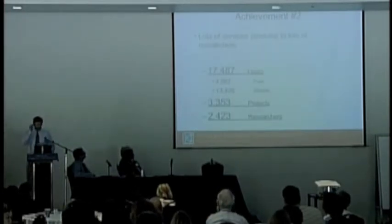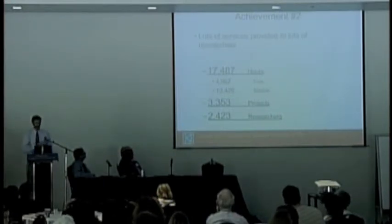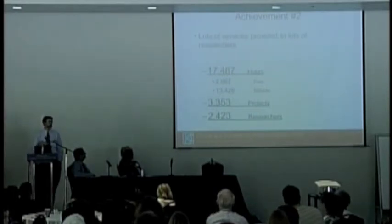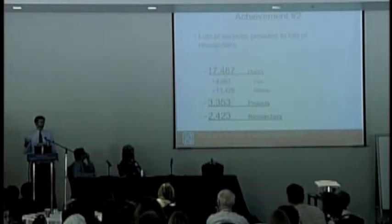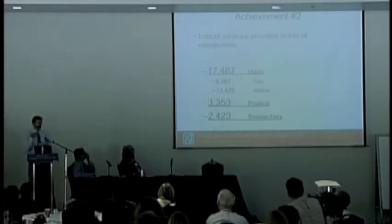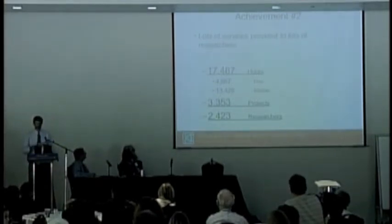Achievement number two is lots of services provided to lots of researchers. We have a big menu, but we also have lots of people who are using this service. Over 2,400 individual researchers — the vast majority of whom are UCSF faculty members — are coming to us for services, many more than once for more than one project. We're providing lots of hours, many of which are free, and actually the majority are billable. People are paying for this because it's a valuable service.